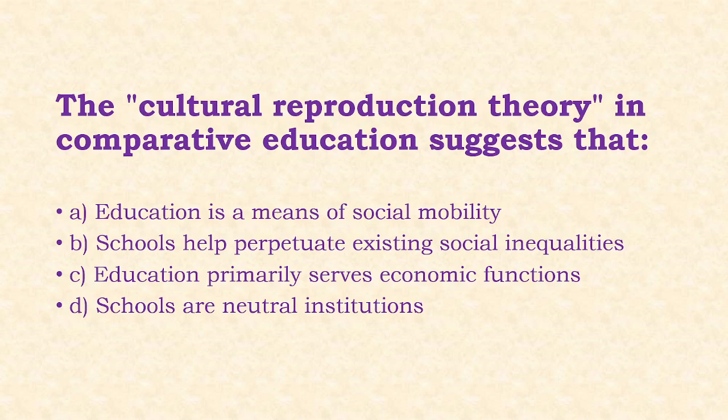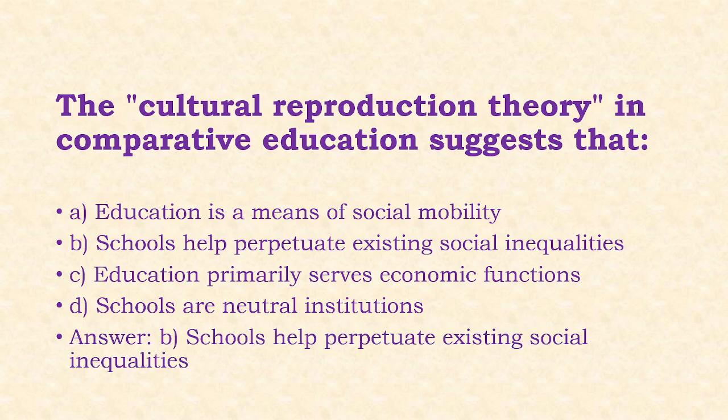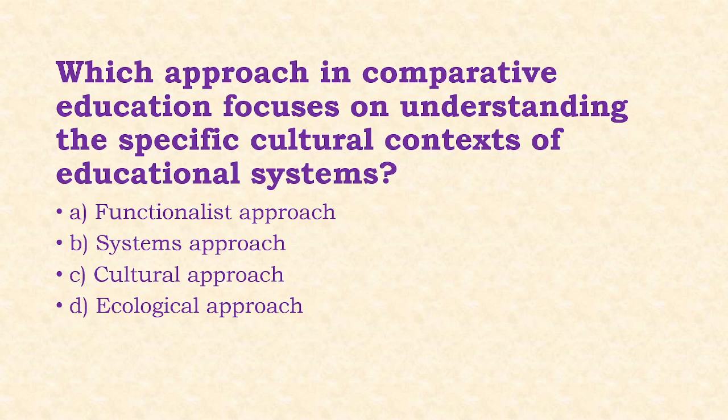Next: The cultural reproduction theory in comparative education suggests that schools help perpetuate existing social inequalities. Options: education is a means of social mobility; schools help perpetuate existing social inequalities; education primarily serves economic functions; schools are neutral institutions. The answer is option B.